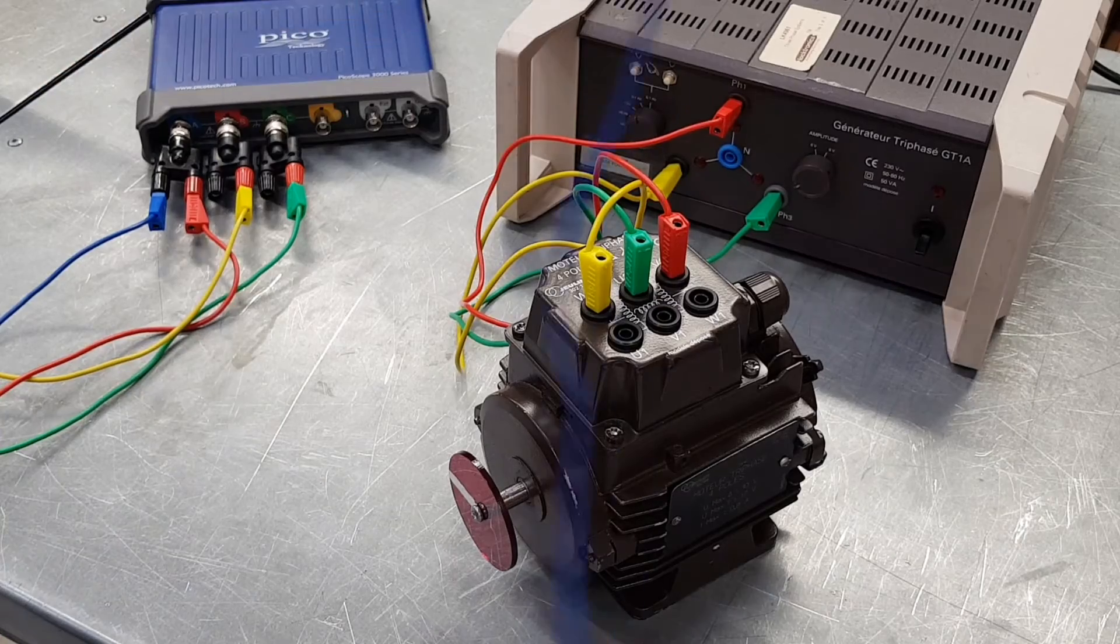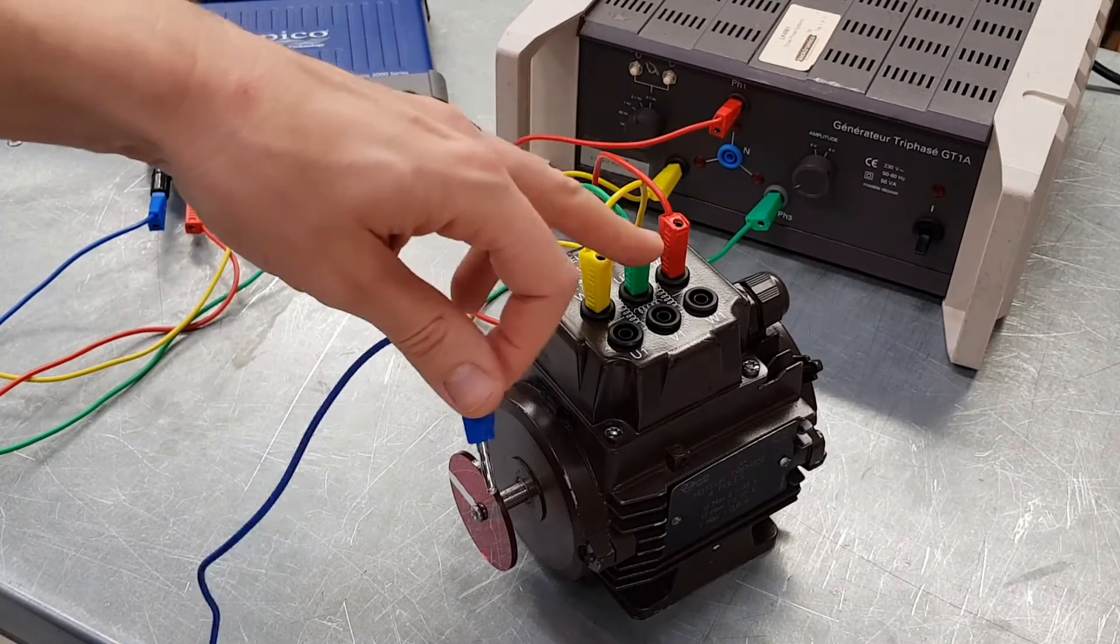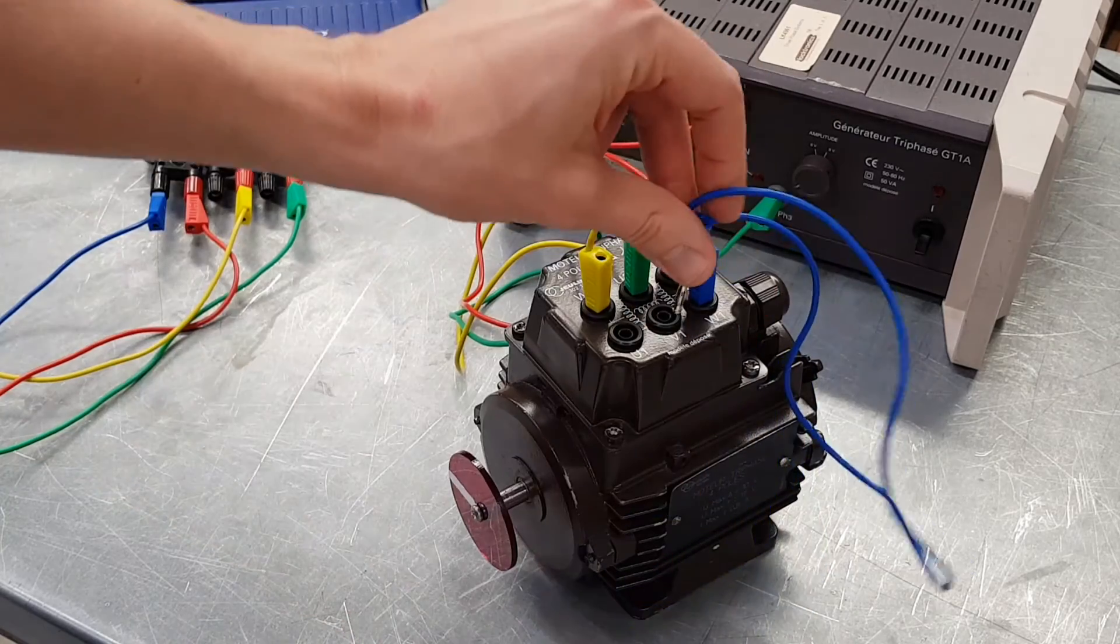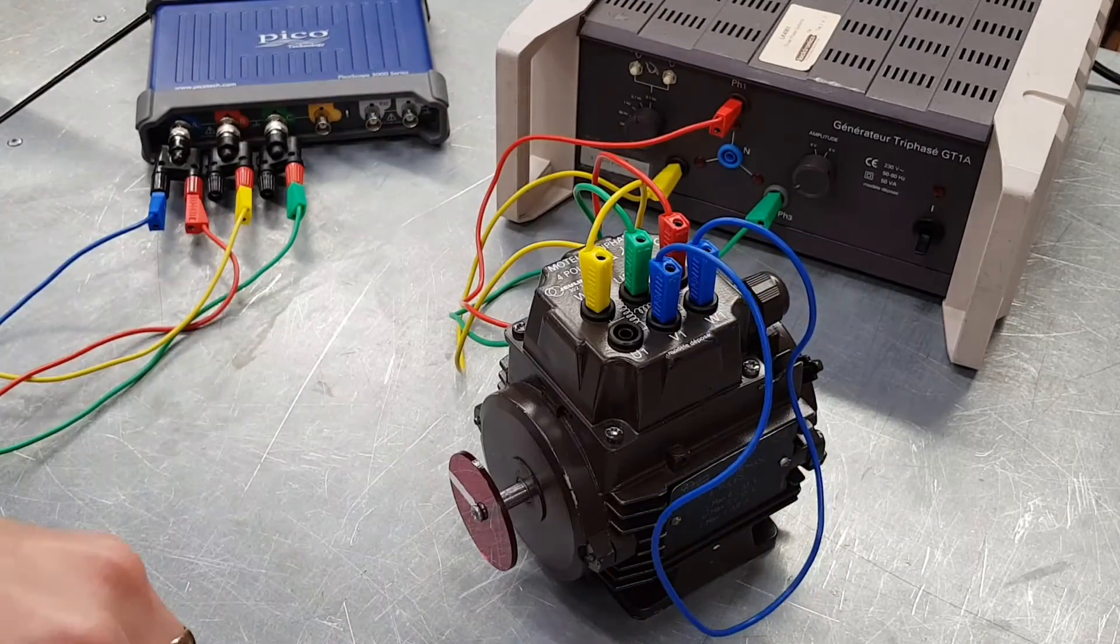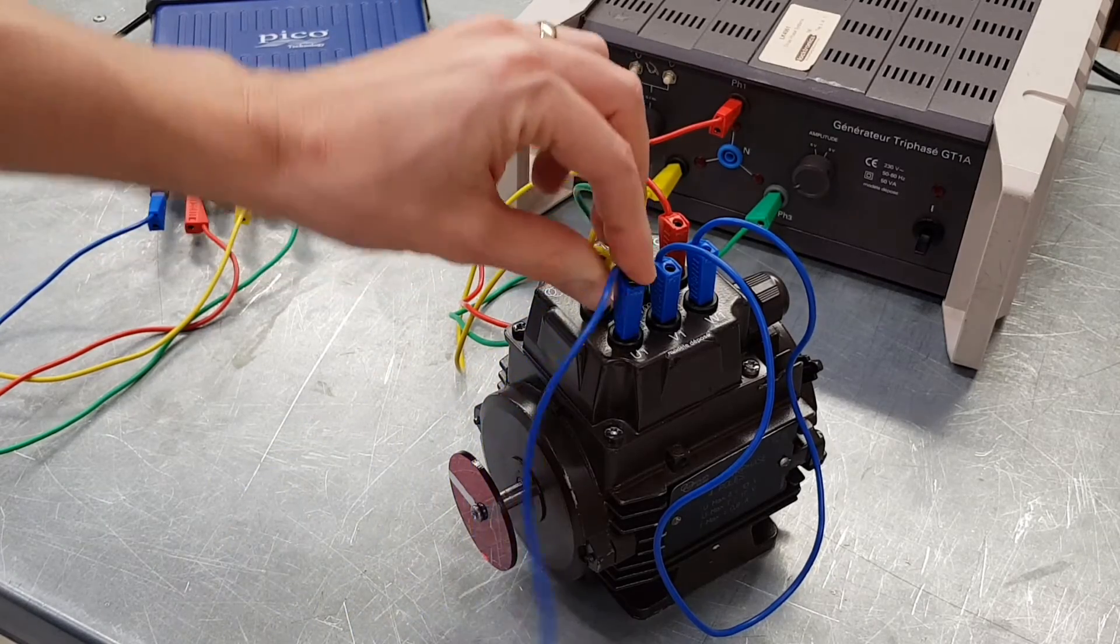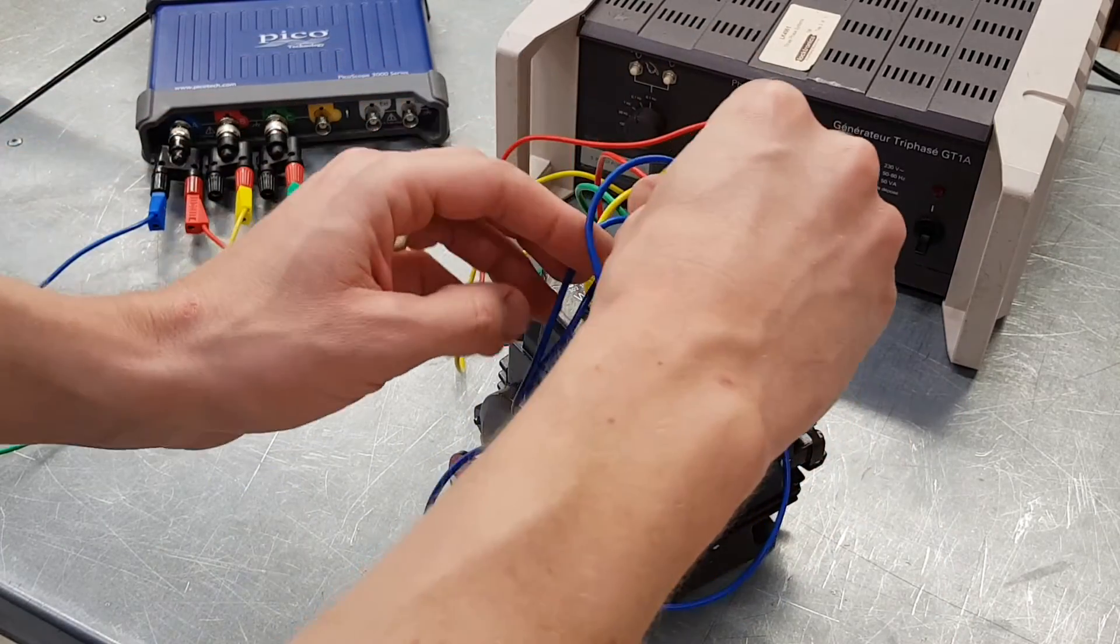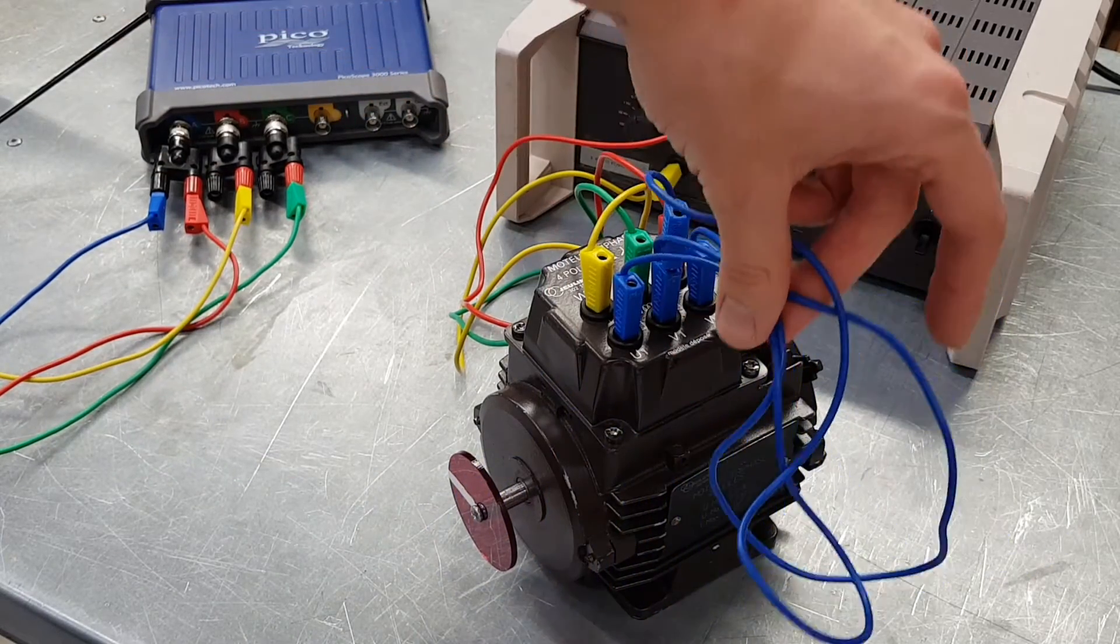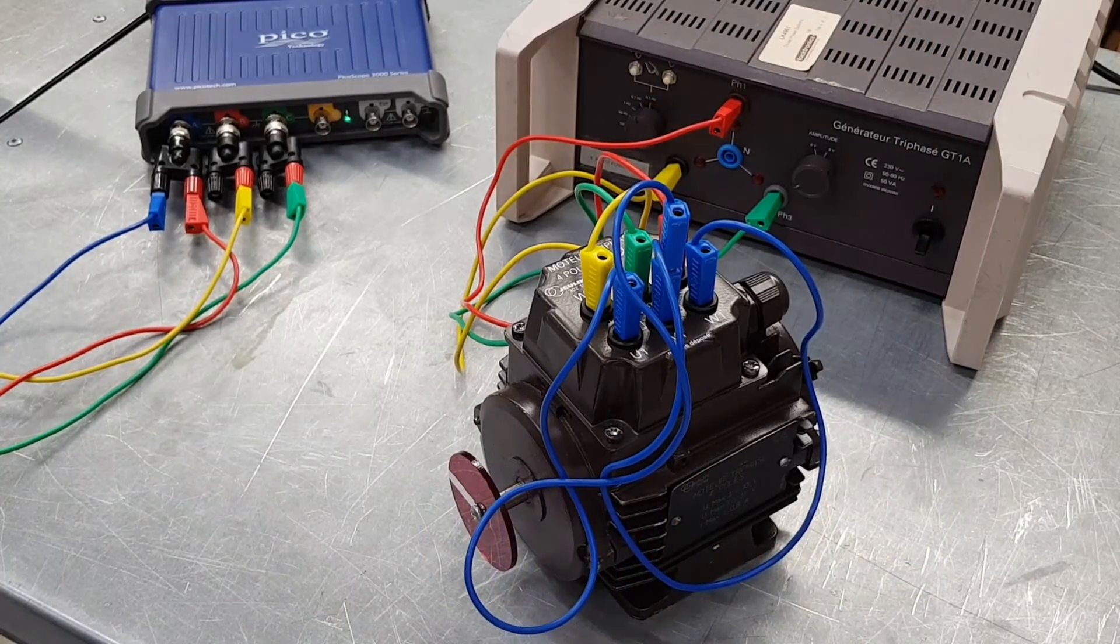What that means is that we're connecting together the other side of each coil to each other, and that gives us a star connection. So we connect those two together and we will connect those two together like so. Now we've got all three of those shorted out and connected to each other.